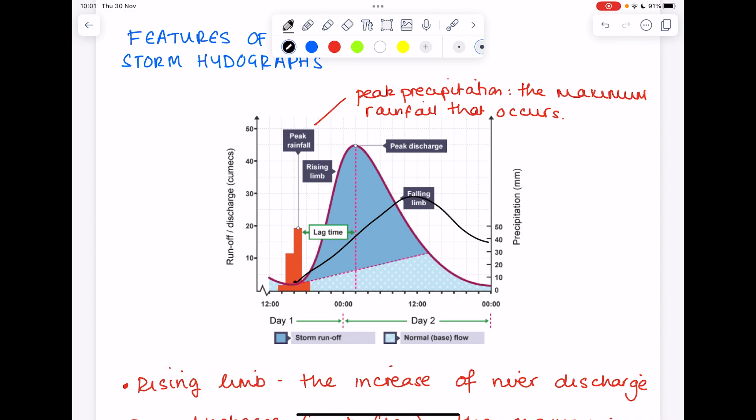That's because we have a longer lag time, a lower peak, and a gently sloping rising limb as we can see here. So yeah, longer lag time, lower peak discharge, and a gently sloping rising limb. And we'll talk about the reasons as to why you get the flashy storm hydrograph versus the subdued storm hydrograph right now.